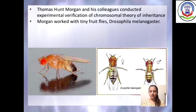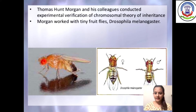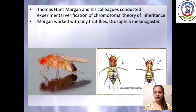The chromosomal theory of inheritance given by Sutton and Boveri was verified by T.H. Morgan, who studied the fruit fly Drosophila melanogaster. In the next video, we can see Morgan's work on Drosophila and how he derived the theory of linkage and recombination.